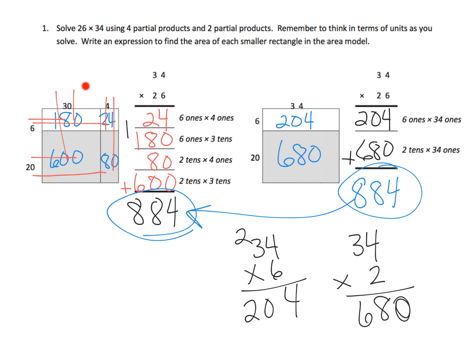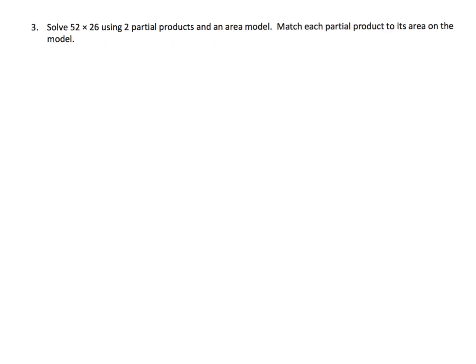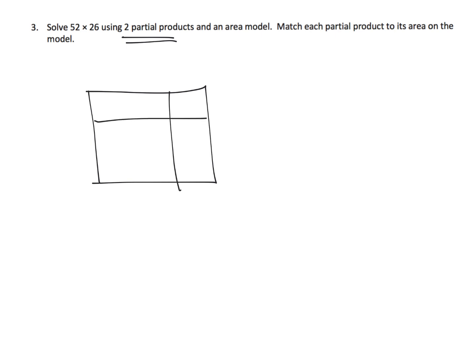Parents and teachers, if at this point in fourth grade your students prefer the four partial products method, by all means let them continue doing that, even as you nudge them toward the more standard algorithm each day. The directions say to use the two partial products method, but if your students aren't tracking with that yet, it's okay. I'll start by doing the decomposition: 52 becomes 50 and 2, and we write the vertical method 26 times 52.